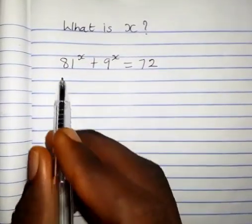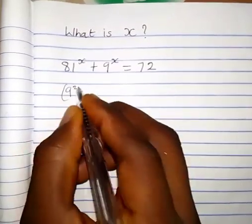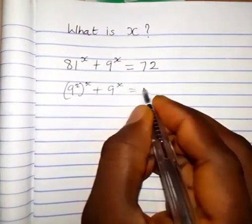What is the value of x in this equation? We can write 81 as 9 squared. So we have 9 squared raised to the power of x plus 9 raised to the power of x, which equals 72.